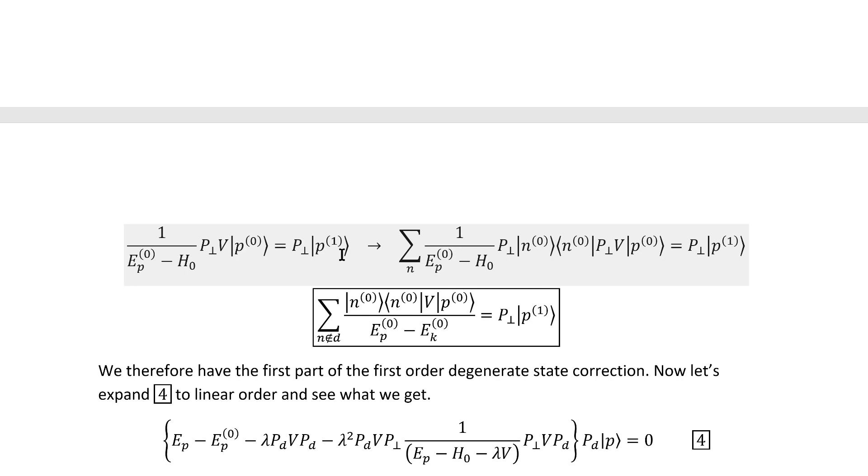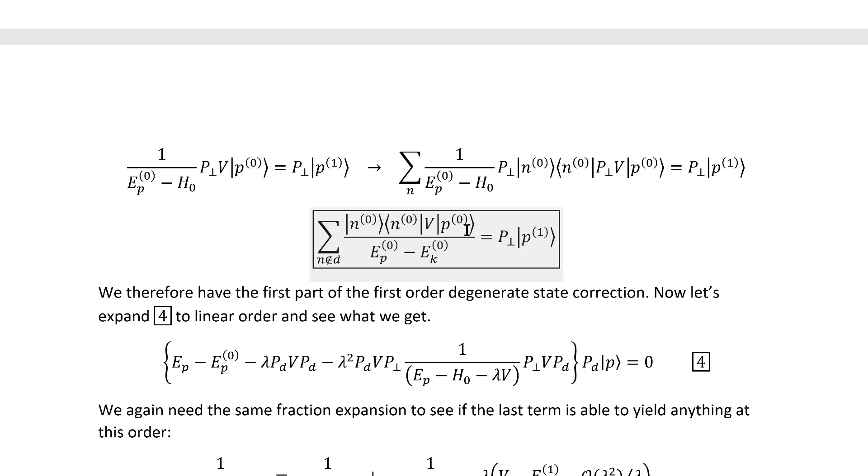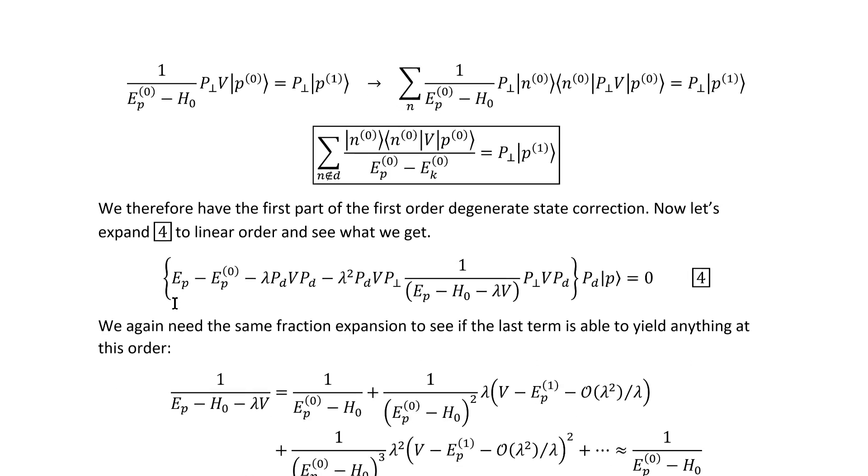So we found something useful from expanding that first equation already. We can get it into a more useful form by adding in some identities there, and working it down a little bit gets us a formula that's actually pretty close to the familiar one from non-degenerate perturbation theory. Note that we get this restriction on the indices from this projection operator acting to the left. We still don't know how to write these in terms of the standard basis states, so we can't exactly use this directly as is, but we will get there from the formulas that we get from expanding the other equation.